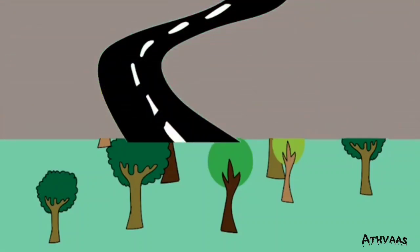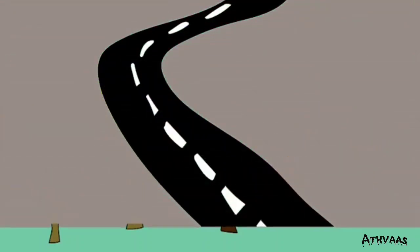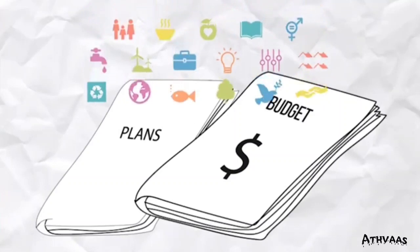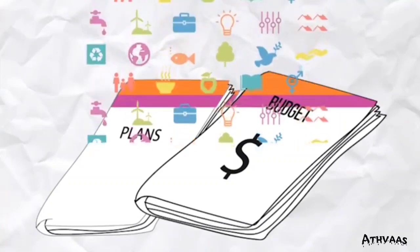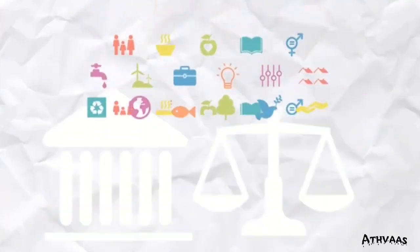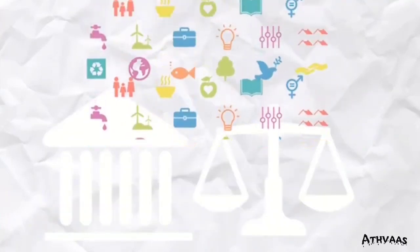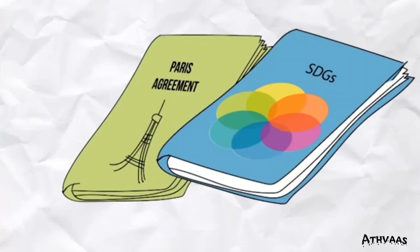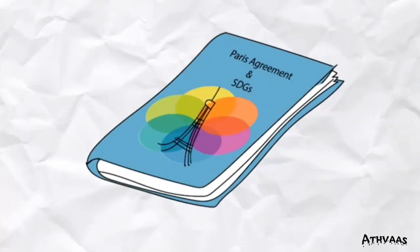The environment should not suffer on behalf of development. The plans should be included in the budgets of different governments so that they can yield more productive and balanced growth. Institutions and legislation should work hand in hand — for example, the Paris Agreement and SDG goals should go together.